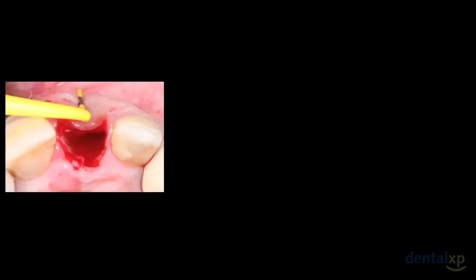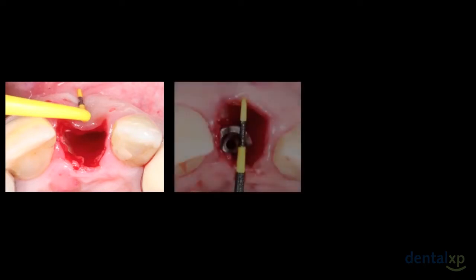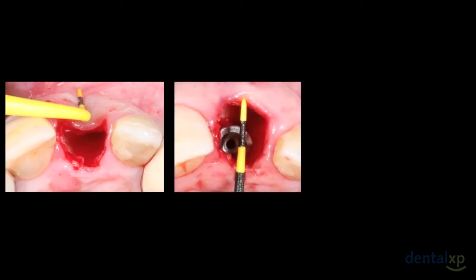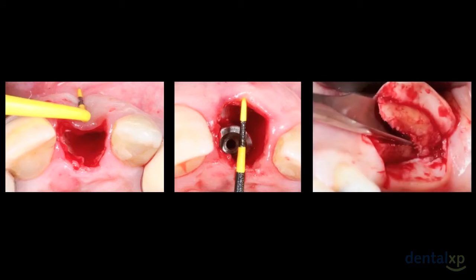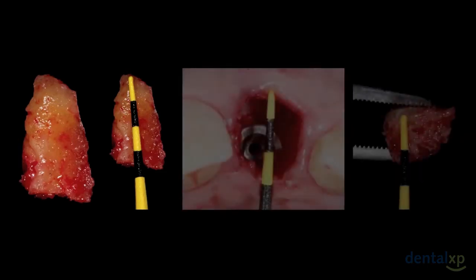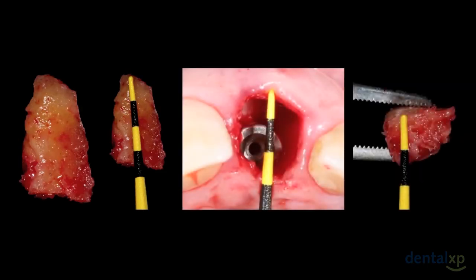We can see here a total absence of the buccal bone wall. Here we have the defect to be reconstructed after platform-switching implant insertion and harvesting of a bone graft from the left tuberosity using a gouge-shaped chisel. After reshaping the bone graft in height and width, sometimes we can harvest the bone graft with a thickness compatible with the gap dimension, as in this case.